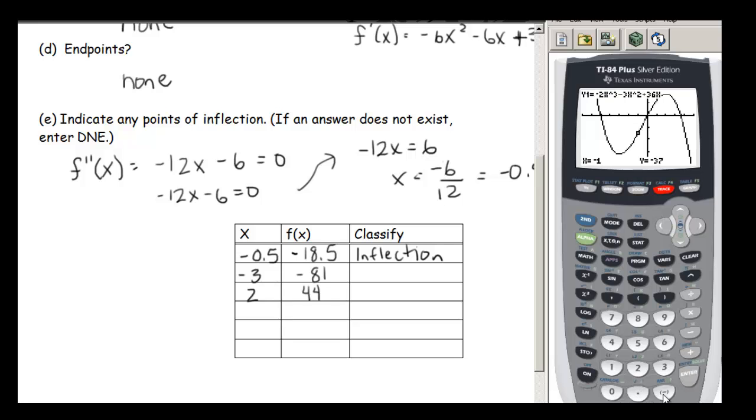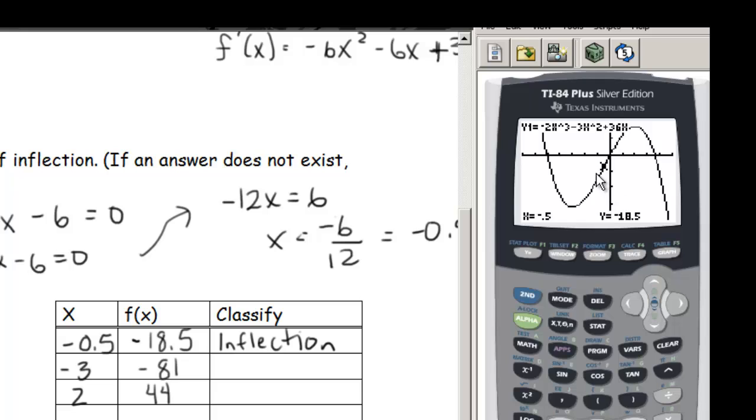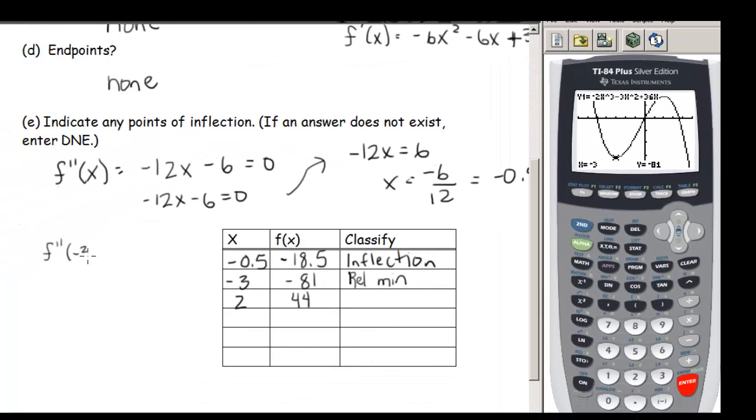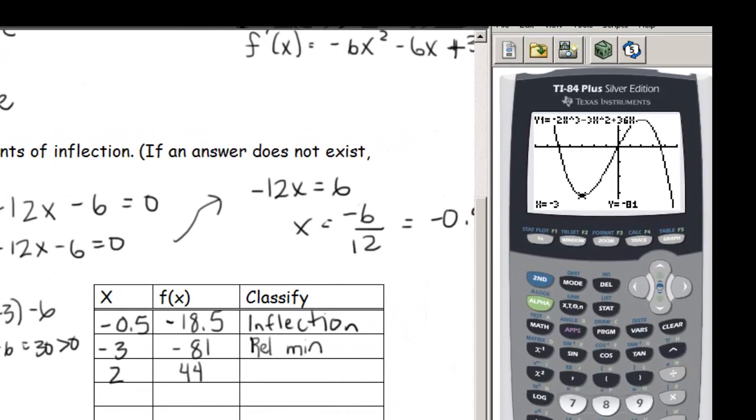So let's look at some of these points. So negative 0.5, that's right there. Does that look like it's an inflection point? Sure does. Negative 3, that's that point right there. So we can tell that that is a relative min. And remember, another way to tell if that thing is a relative min is to take that x value and to plug it into our second derivative. So this would give us a 36 minus 6, which is 30, which is greater than 0. That means my function is concave up there, and so that is a min.